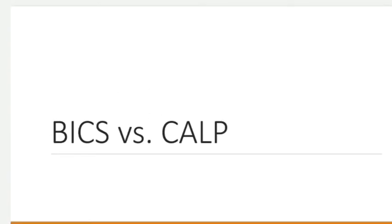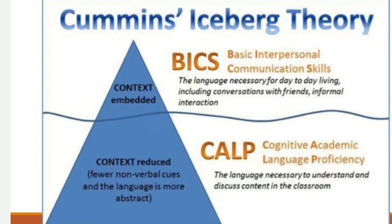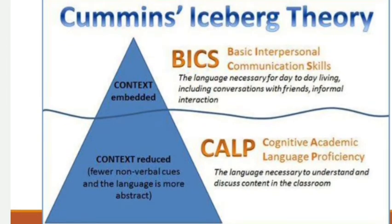Now let's find out the difference between BICS and CALP. According to Cummins' iceberg theory, BICS is on the top. It stands for Basic Interpersonal Communication Skills — the language necessary for day-to-day living, including conversations with friends and informal interaction. This refers to everyday interaction with people — basic interpersonal communication.